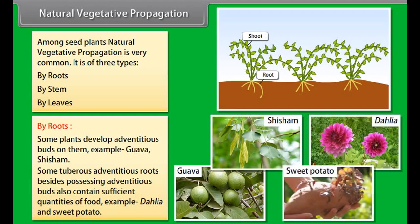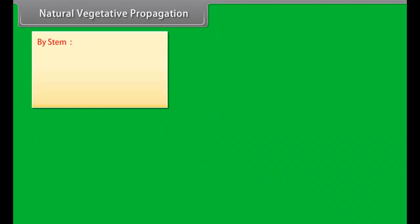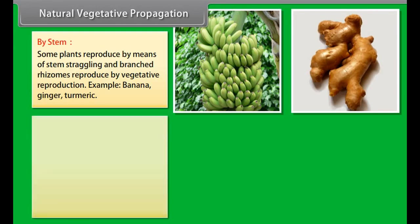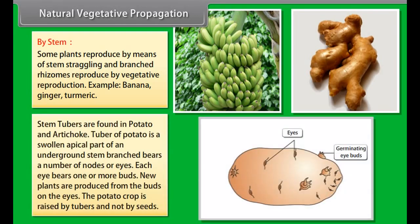Among seed plants, natural vegetative propagation is very common. It is of three types: by roots, by stem, and by leaves. Some plants develop adventitious buds on them, for example guava and shisham. Some tuberous adventitious roots, besides possessing adventitious buds, also contain sufficient quantities of food, for example dahlia and sweet potato.